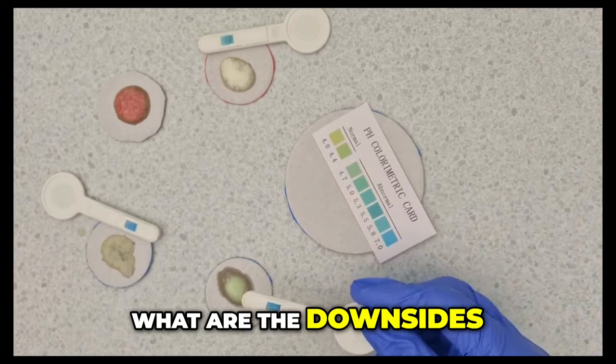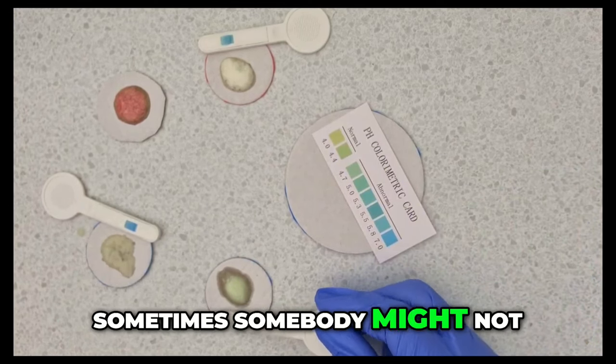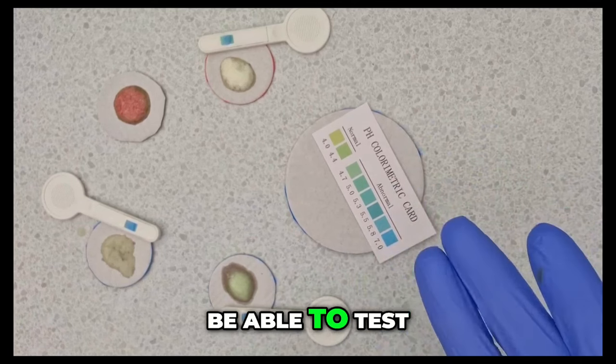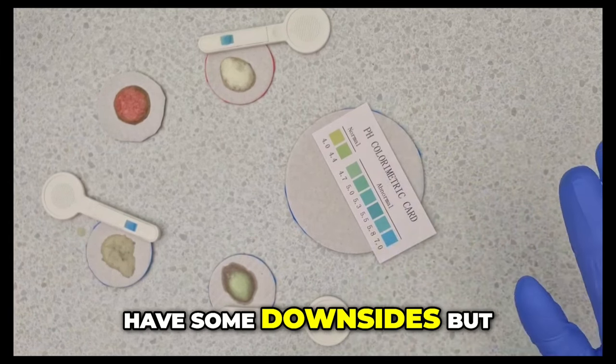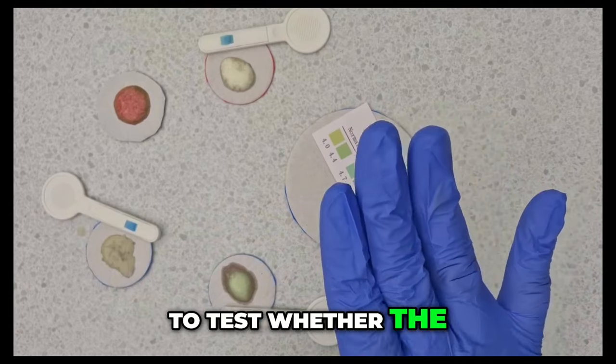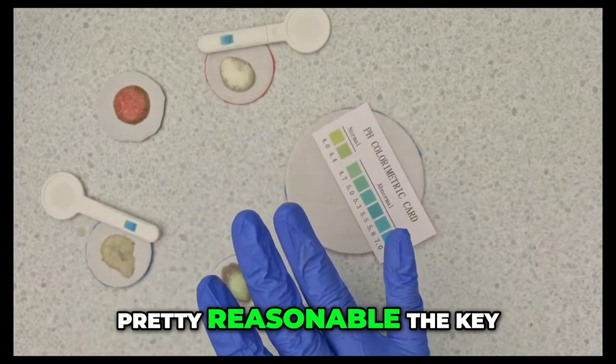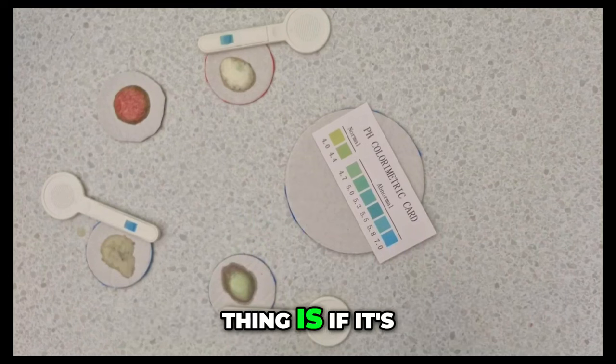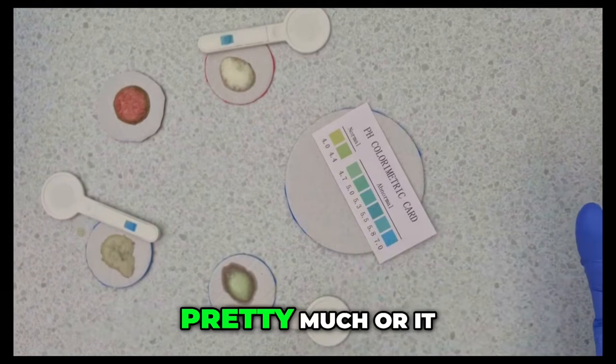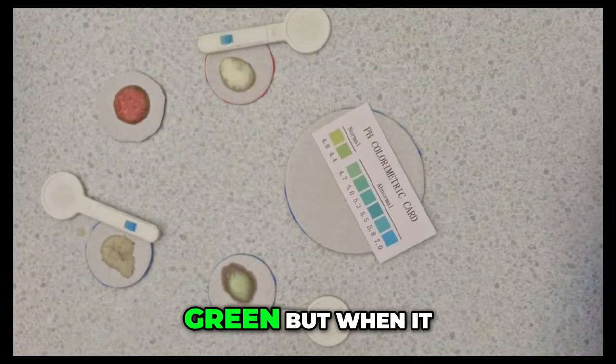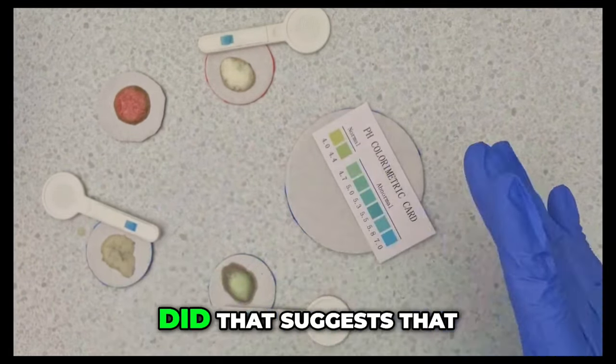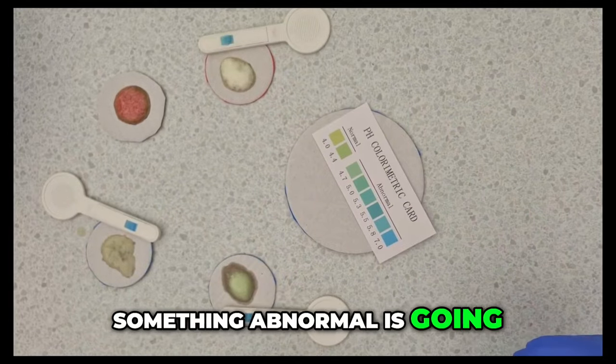What are the downsides? Sometimes somebody might not do it properly. You may not get enough of the discharge on the kit to be able to test properly. So it does have some downsides. But if you do get enough of the discharge and it's being used to test whether the discharge is normal or not normal, I think that's pretty reasonable. The key thing is if it's a normal discharge, the kit shouldn't change color pretty much or it should just remain light green. But when it changes to a clear blue, like all the ones I've got here did, that suggests that something abnormal is going on.